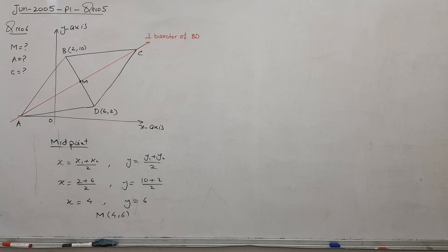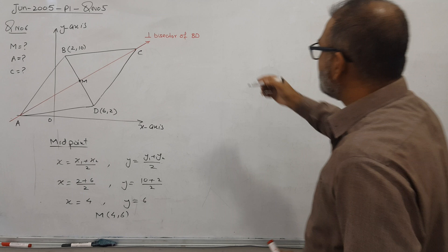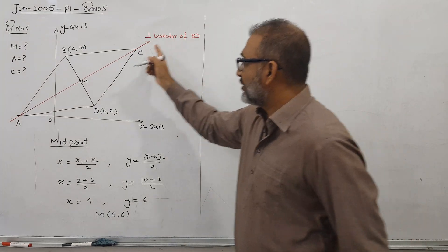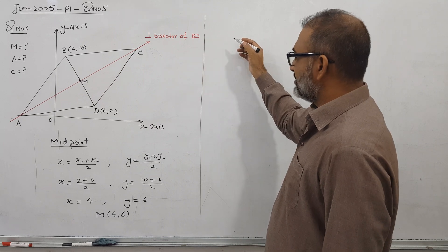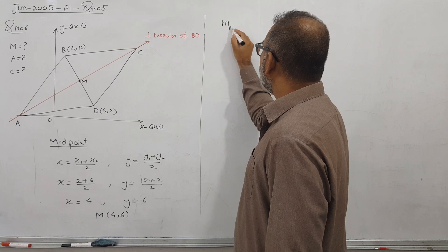So midpoint coordinate is okay. Now I have finished midpoint coordinate, and I will go for equation of perpendicular bisector. So first of all, the gradient of the BD. So gradient of BD.